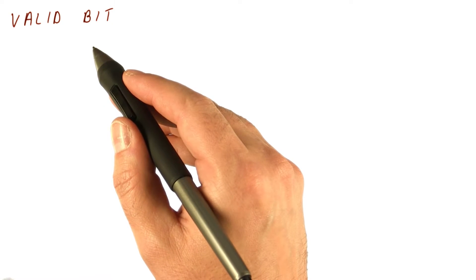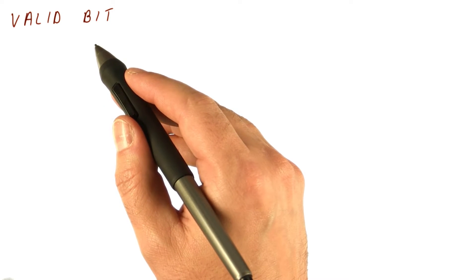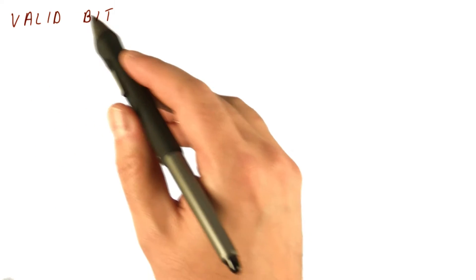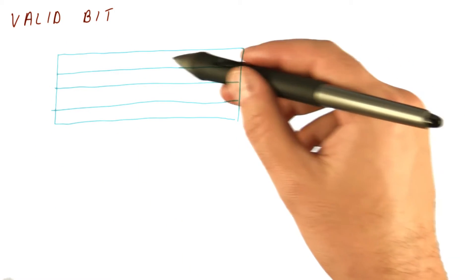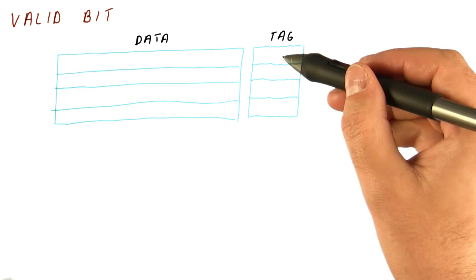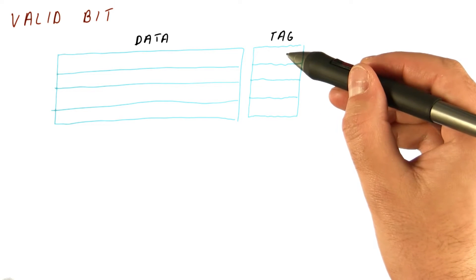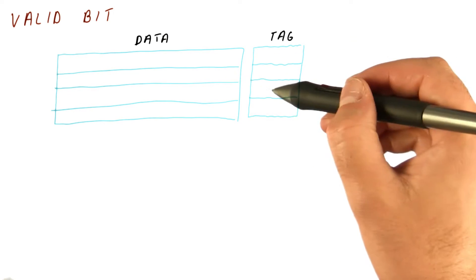Another piece of information that the cache maintains about each of the blocks it has is the so-called valid bit. If we look at the cache with four blocks of data and the tag that tells us which block we have in each of the lines,